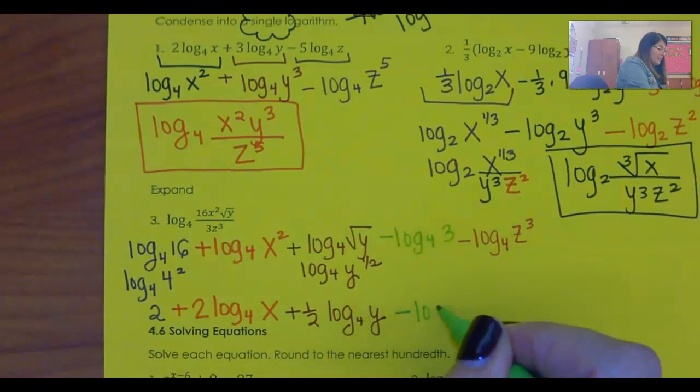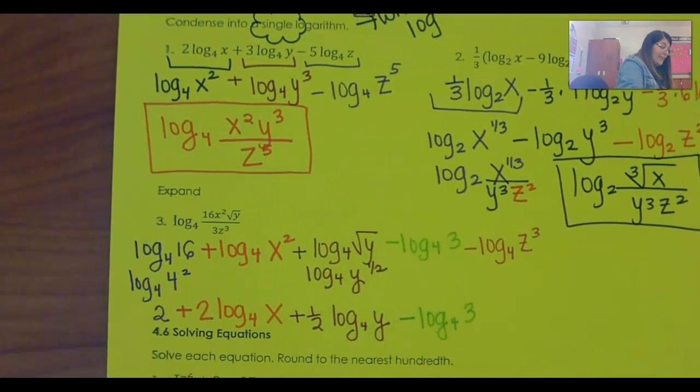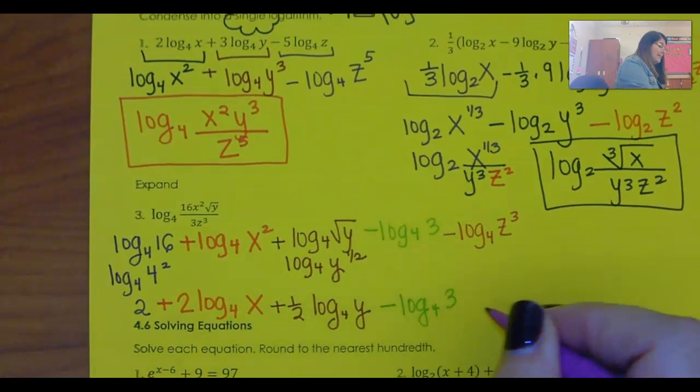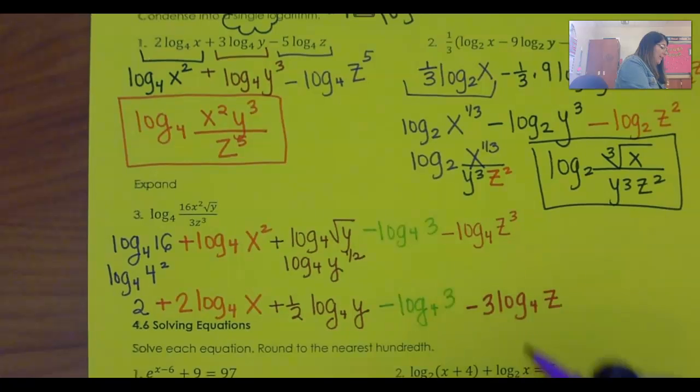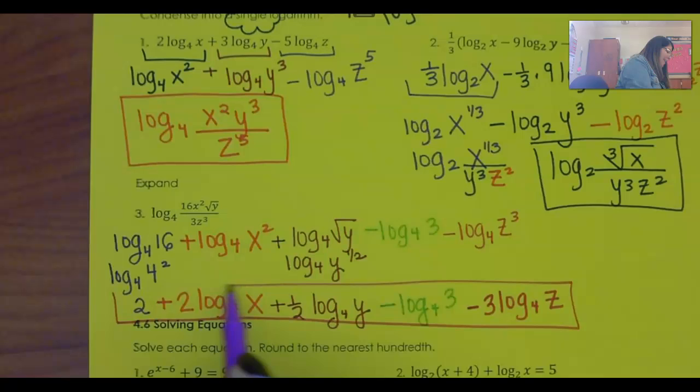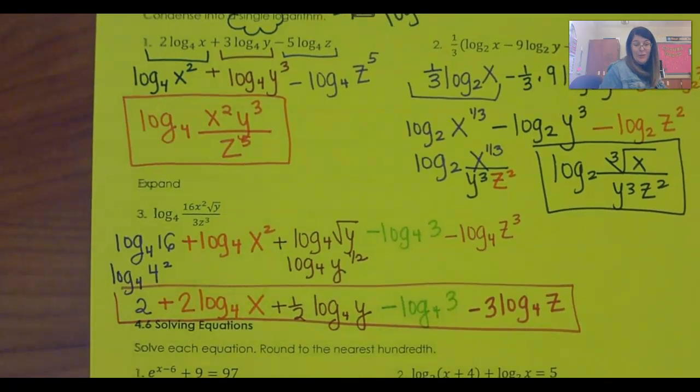Now minus, there's nothing to simplify here, this guy. And my last one, this power comes out as a coefficient, 3 log base 4 of z. Now, as goofy as it is, there it is. This is an expanded log.